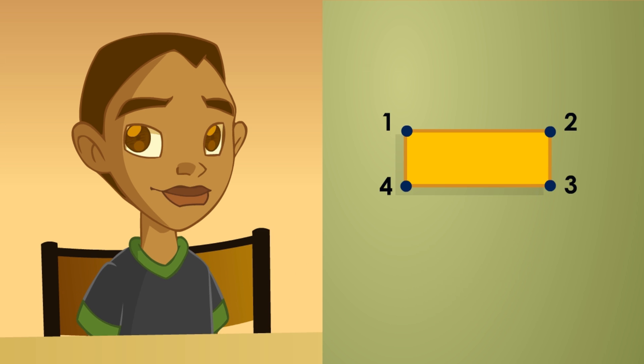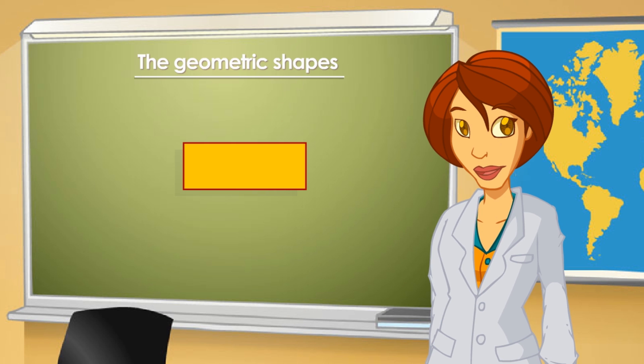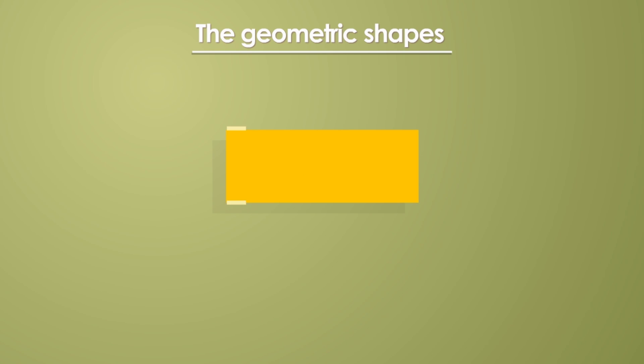Rectangles have got four vertices, the inside area and four sides, but they aren't equal. Very good, children. Rectangles have got two pairs of equal sides. Please, look at the board. I've marked the sides that are equal.